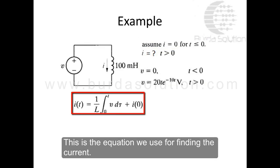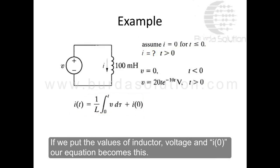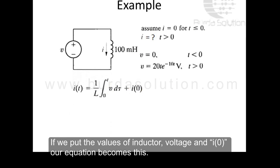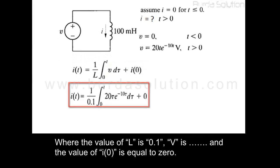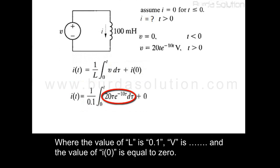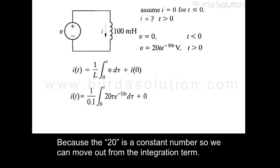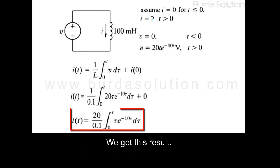This is the equation we use for finding the current. Substituting the values of the inductor, voltage, and i(0): L = 0.1, V = 20t · e^(−10t), and i(0) = 0. Because 20 is a constant, we can move it outside of the integration term.